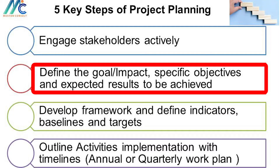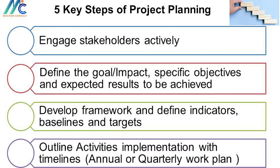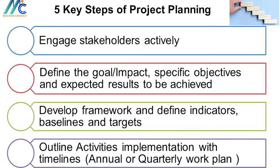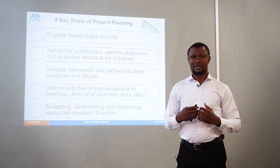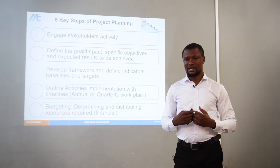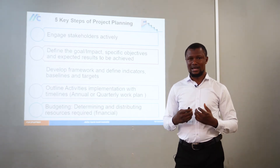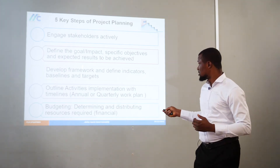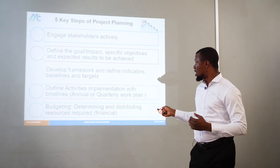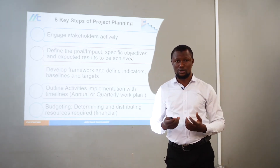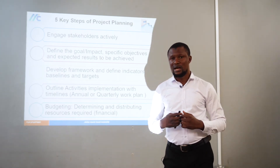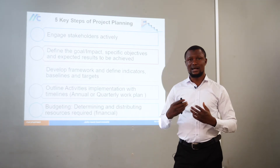Secondly, you need to define your program goal and impact with specific objectives and expected results to be achieved. Thirdly, you need to develop a framework — here we call it the M&E framework — and define your key performance indicators as well as your baseline, and then set realistic targets. We have a separate module on how to use logical framework and results framework to plan your project, how to develop SMART indicators, and how to define your baseline and set realistic targets.